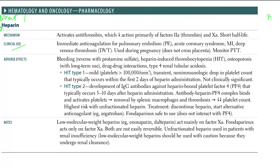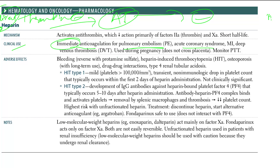The clinical uses of heparin — an indirect thrombin inhibitor, because it binds and changes the conformational change of antithrombin, indirectly inhibiting thrombin. Clinical uses include immediate anticoagulation for pulmonary embolism, acute coronary syndromes, MI, DVTs, and use during pregnancy because it is safe — it does not cross the placenta. You can monitor PTT for heparin.